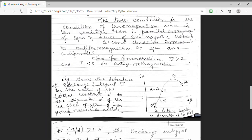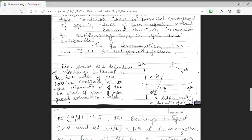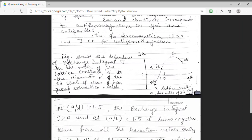We can see that if A by D is greater than 1.5, we have exchange integral J to be positive. And here we can see that for iron, cobalt and nickel, A by D is greater than 1.5. Hence, for these elements, J must be positive. That means these elements should be ferromagnetic in nature. And this is also experimentally proved that these materials are ferromagnetic in nature.